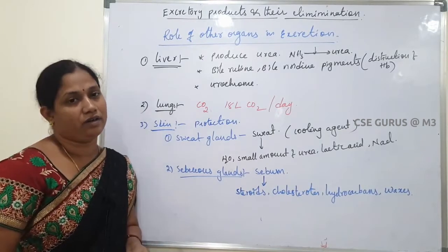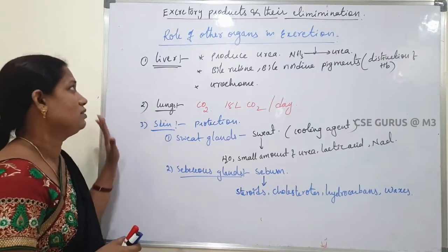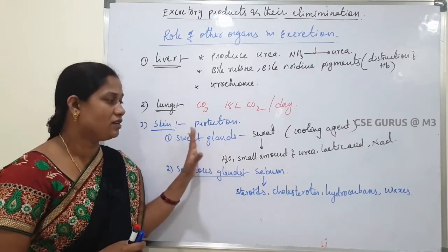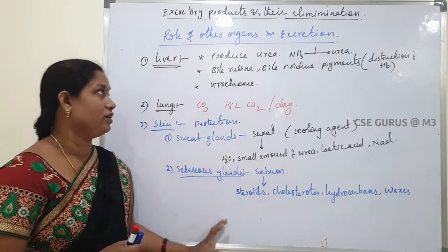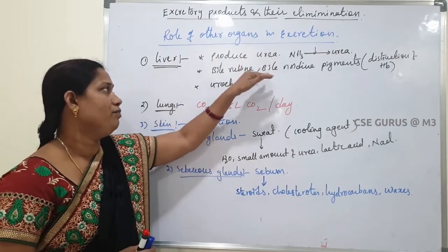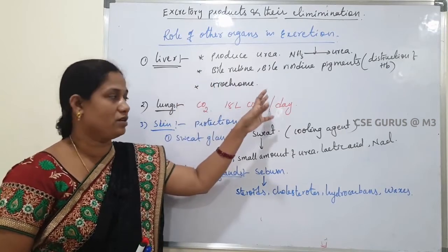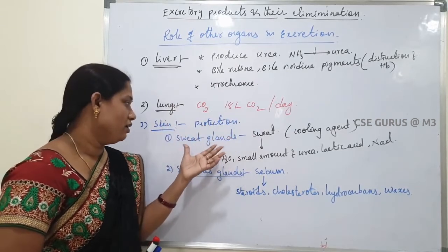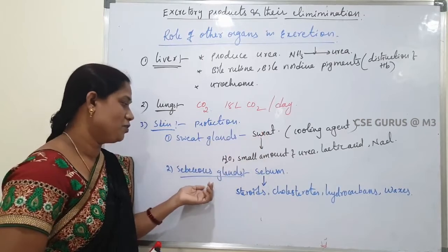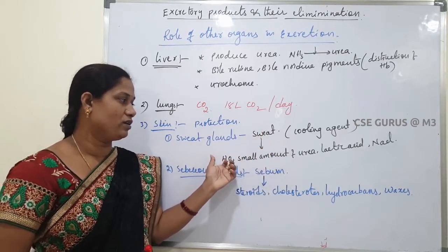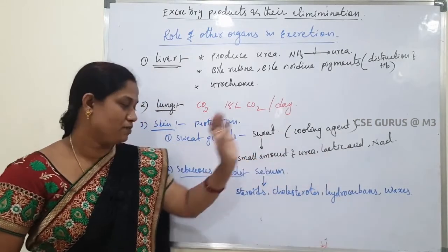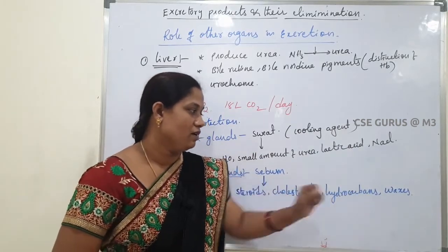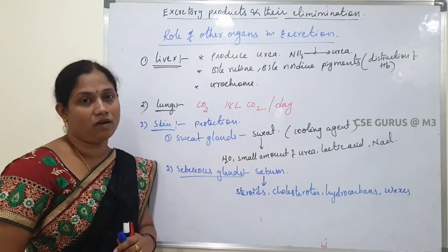To summarize, these organs are not actual excretory organs, but they perform excretory functions by eliminating waste products from the body. The liver produces urea and eliminates bilirubin, biliverdin, and urochrome. The lungs eliminate carbon dioxide. The skin provides protection, and sweat glands produce sweat containing water, urea, lactic acid, and sodium chloride, while sebaceous glands produce sebum containing steroids, cholesterol, hydrocarbons, and waxes.